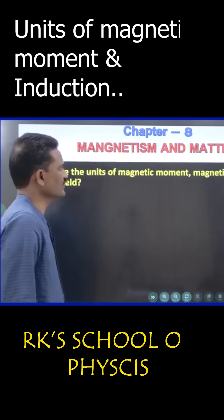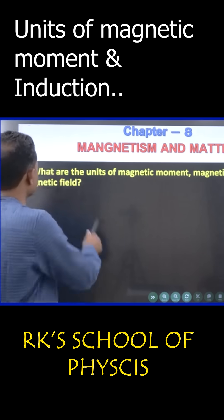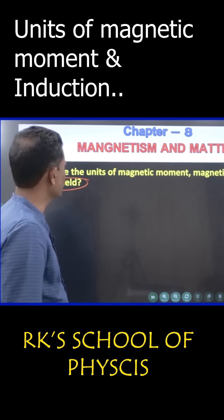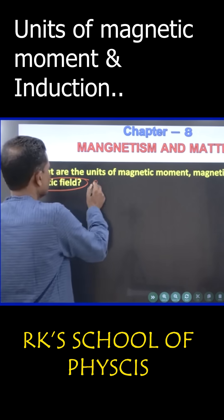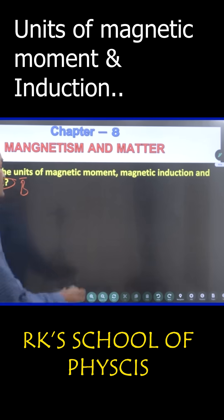What are the units of magnetic moment, magnetic induction, and magnetic field? It shouldn't be magnetic field, there is no meaning. Magnetic field is measured by magnetic induction, and magnetic induction is already given here. It should have been magnetizing field, either this one or that one.